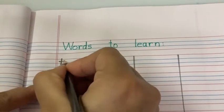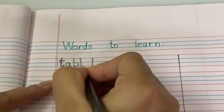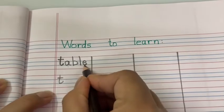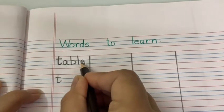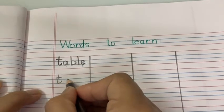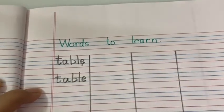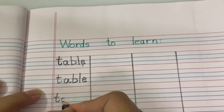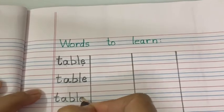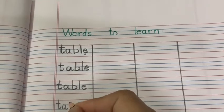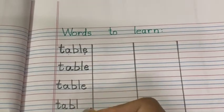Table. T-A-B-L-E. Table. Okay children, T says 'tuh', A and E together make the long sound of A. E is silent here, so we will write T-A, B says 'buh', L says 'luh', and E is silent. Table. T-A-B-L-E. T says 'tuh', A says 'ay' - this is the long sound - B says 'buh', L says 'luh'. Table.